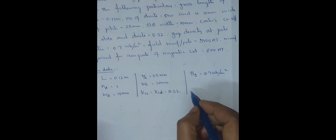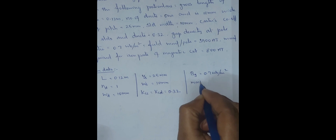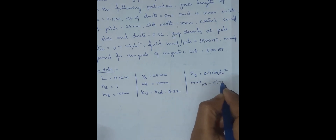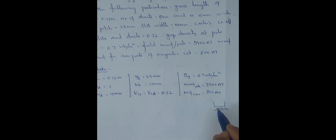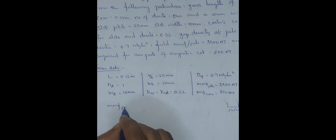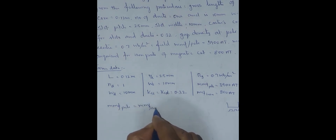Field MMF of pole is 3900 ampere turns. MMF for iron parts is 800 ampere turns — this covers the pole, stator slots, and rotor slots, essentially the iron part or tooth link. The relationship is: MMF in air gap plus MMF in iron parts equals MMF at pole. So, MMF at pole equals MMF in air gap plus MMF in iron parts.